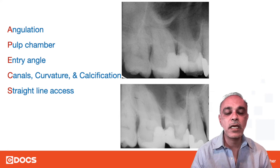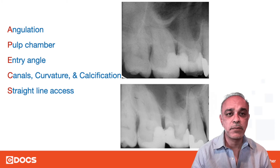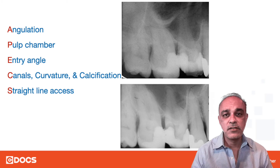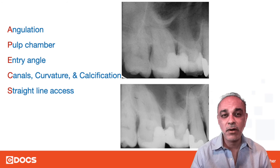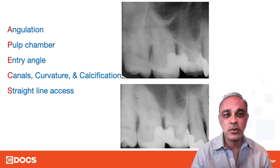Next, I want to take a look at the pulp chamber. Is it wide? Is it small? Is it receded? Does it have a pulp stone in it? I want to know that before getting into the actual tooth.